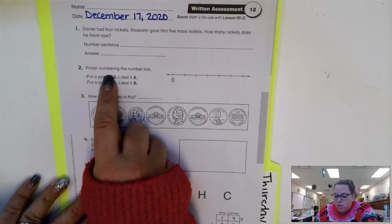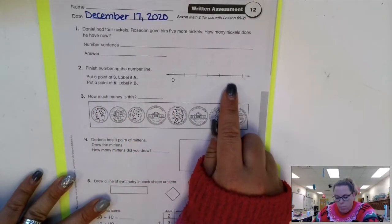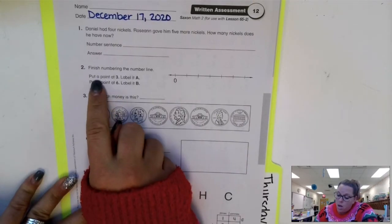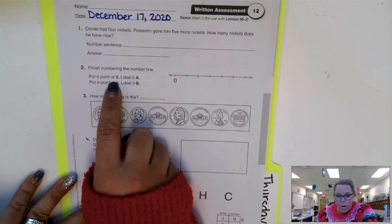Number two says, finish numbering the number line. You can see it started at zero, so go up by ones. After you've finished numbering the number line, go ahead and put a point at three.